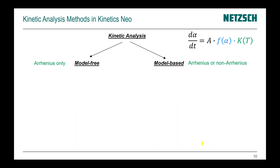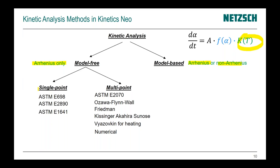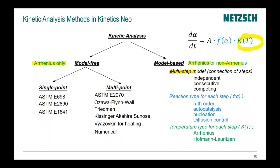There are two approaches: model-free and model-based. Model-free is based only on Arrhenius temperature dependence. Model-based is where the temperature dependence can be either Arrhenius or non-Arrhenius. For model-free, there are two groups: single-point analysis like STM, and multipoint analysis like Ozawa, Friedman, Kissinger, and Vyazovkin. For model-based, there is always multipoint analysis, but here we have several steps where steps can be connected by different ways — they could be independent, consecutive, or competing. The reaction type for each step could be N-order, autocatalysis, or different types. Temperature dependence can be either Arrhenius or non-Arrhenius, like the Hoffman-Lauritzen theory for crystallization.